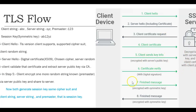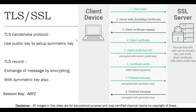Now both sides have generated the session key, which is a private symmetric key. The server will send a final finish message encrypted with the symmetric key. The client has the symmetric key so it can decrypt it and verify that it has received the finish message from the server. The handshake is now complete and the connection is established. Every message going from client to server and server to client will be encrypted via the session key. This is the TLS record step.